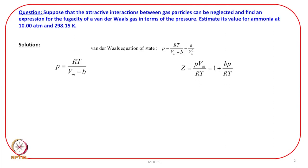In order to evaluate the fugacity coefficient or fugacity, we need information on the compression factor Z. Z is equal to PVm/RT. If you now manipulate P = RT/(Vm - b) and rearrange to get PVm/RT, you will see that Z turns out to be equal to 1 + BP/RT. It is just by rearranging. And from this, Z - 1 over P is going to be equal to B over RT.